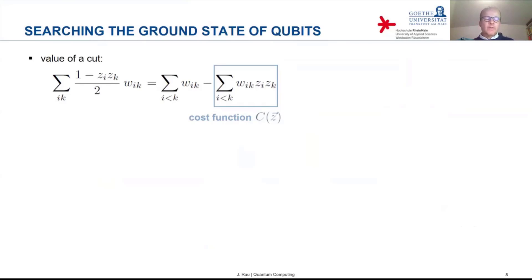And many classical optimization problems, not all of them, but many of them, can be cast in this form. That you have some cost function which you need to minimize.